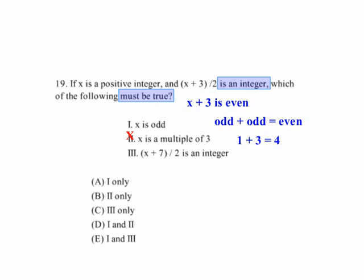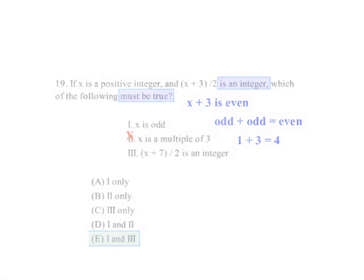But since it's an odd number, when we add an odd number to another odd number, in 7's case, x plus 7 over 2 would also be an integer. So 1 and 3 are true.